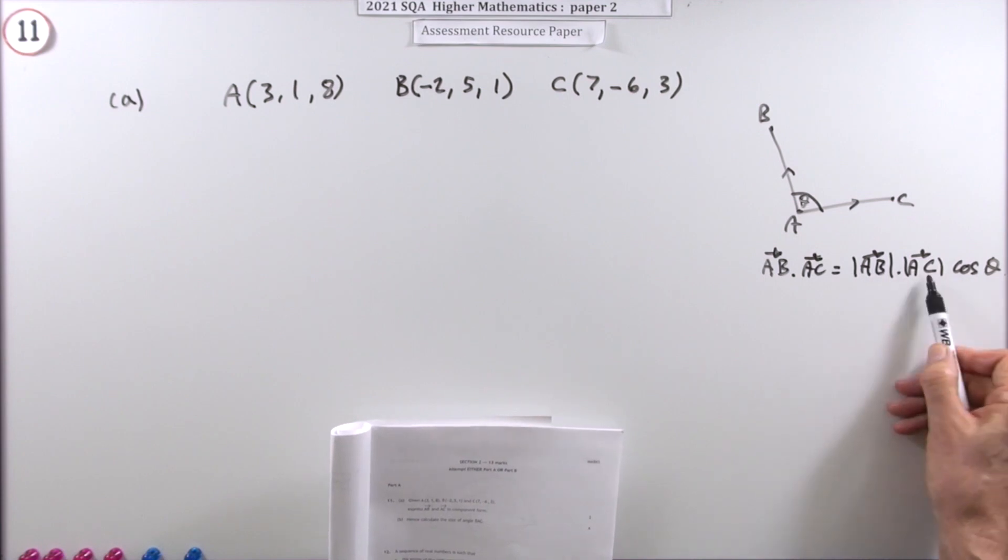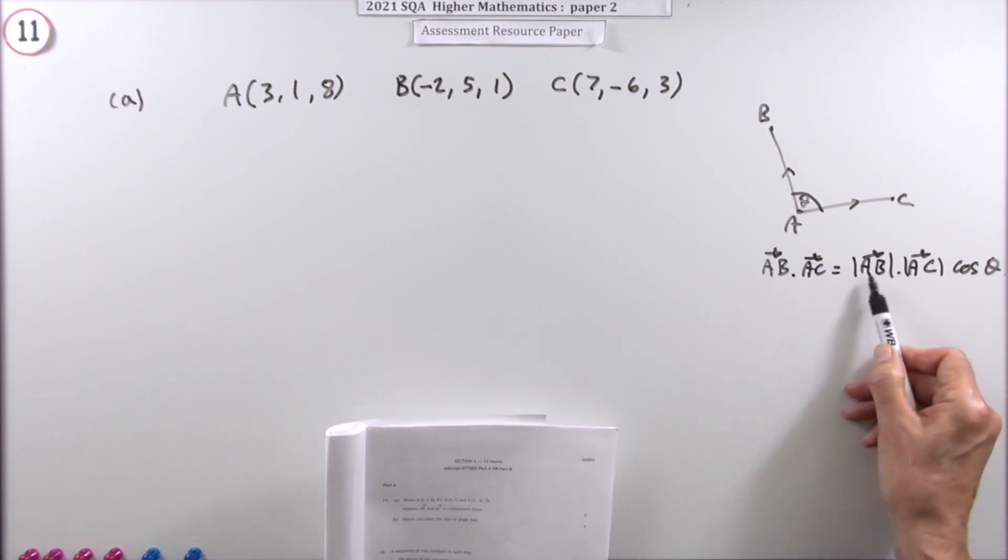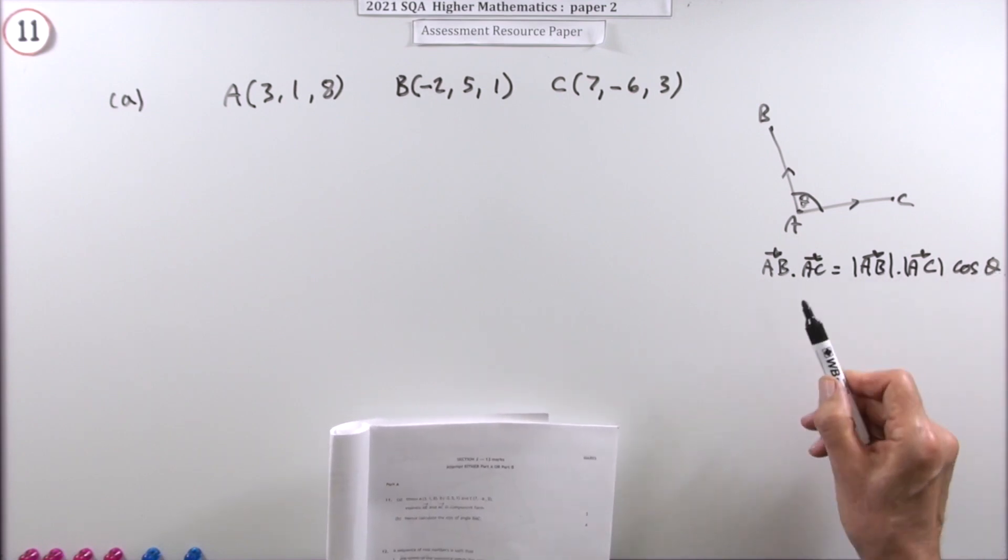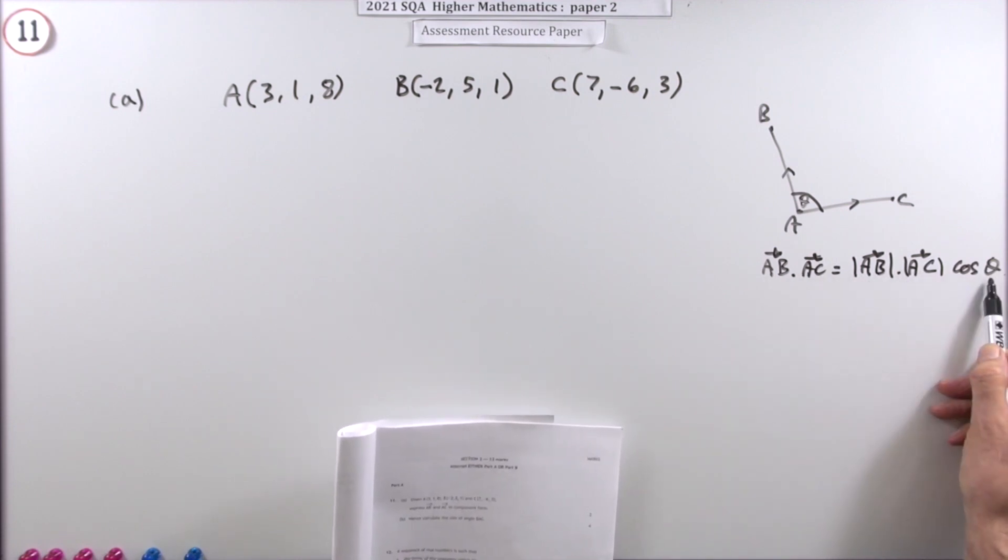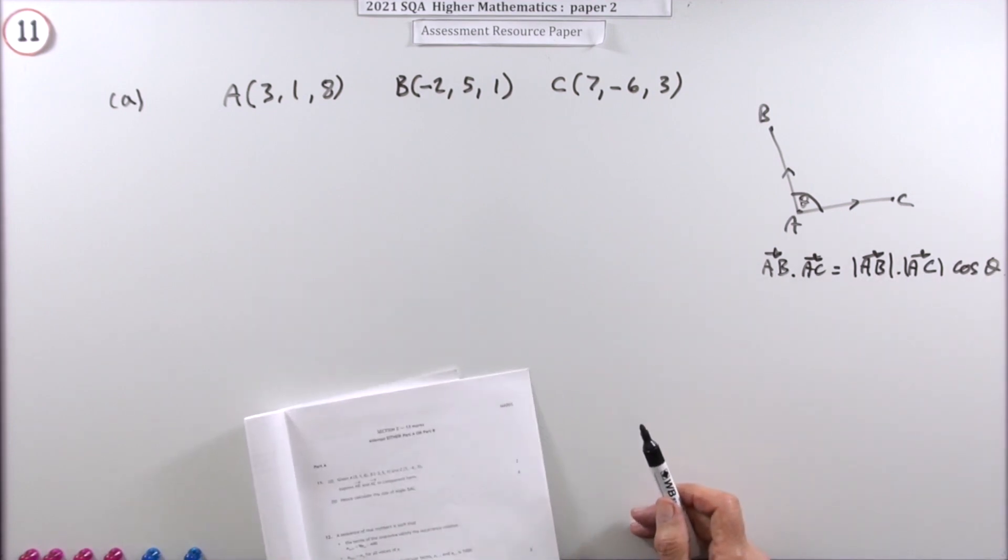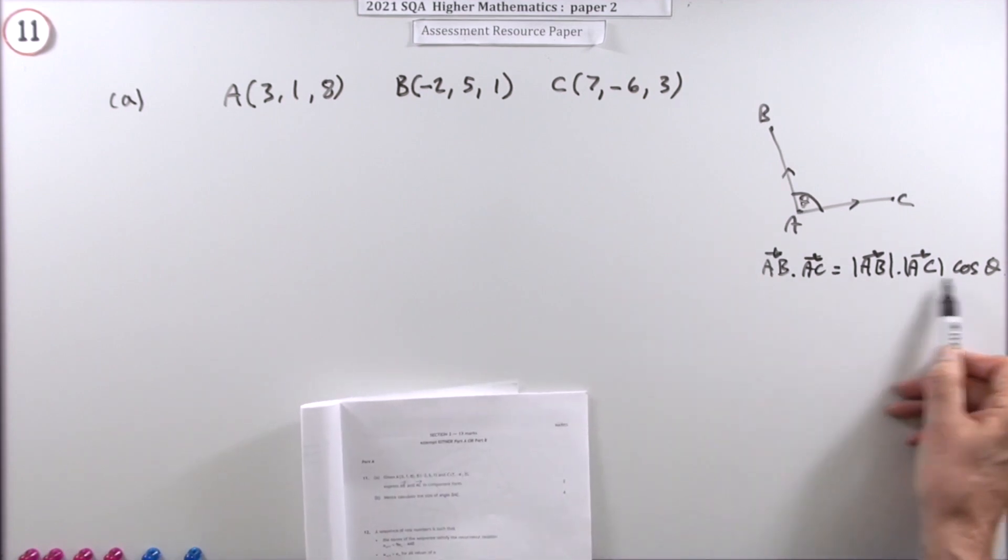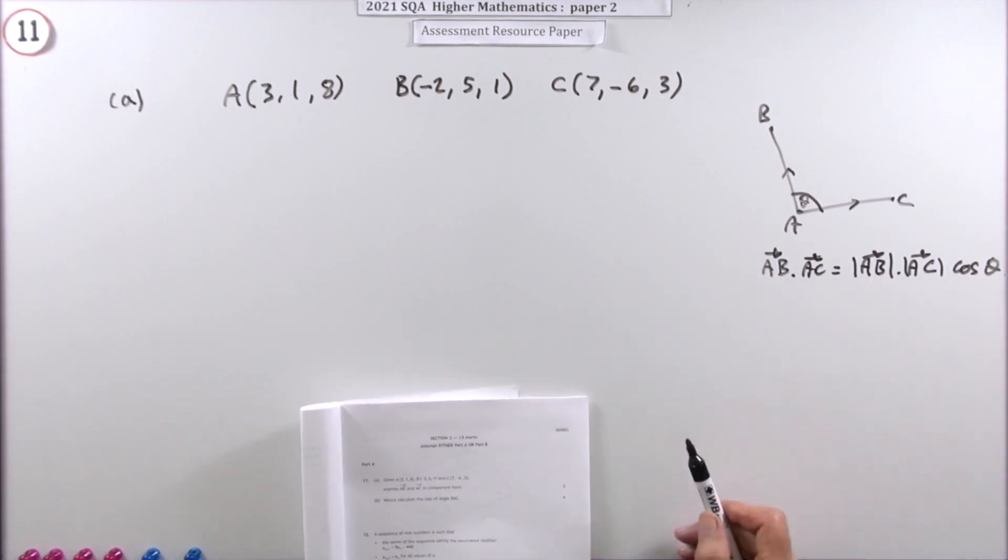So if you know there's one, two, three, that's just the one part. There's four parts there. If you know three of them, you can find the fourth. So if you're looking for the angle, you're just going to rearrange that slightly, take these across and divide. So the first part is get these two. Get AB and AC.